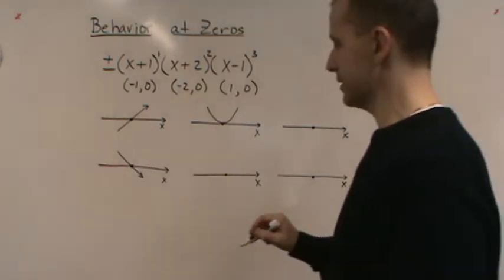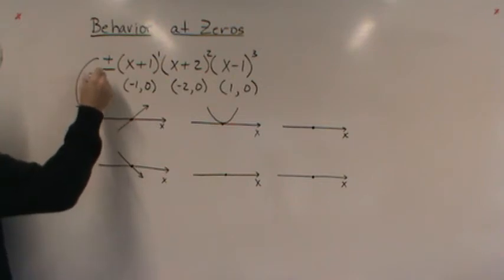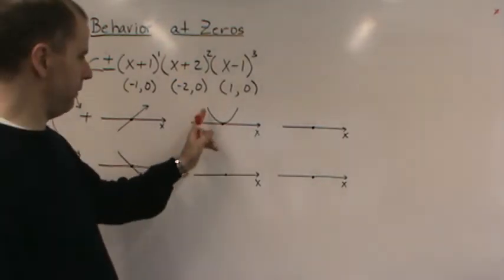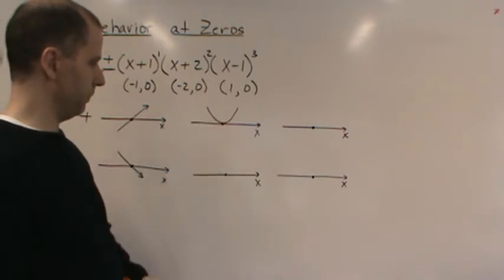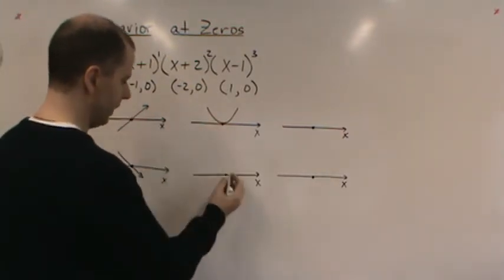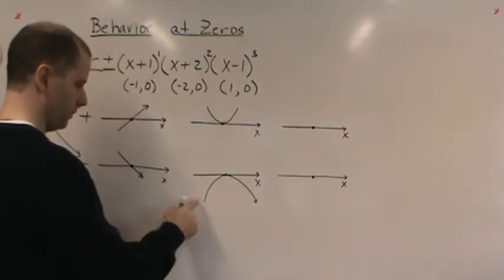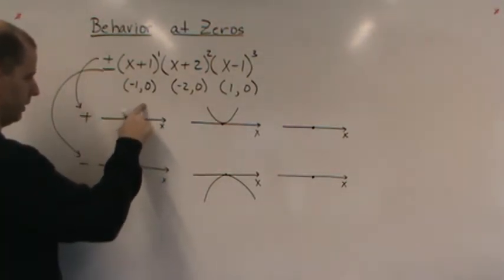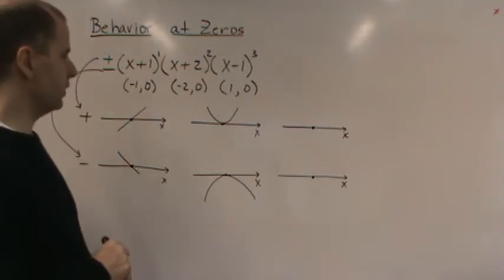With positive leading behavior, the graph is above the x-axis, touches down to the point, is tangential to it, and then changes direction back up. If the leading behavior is negative, it does the same thing but from below — it comes up, touches the x-axis tangentially, and turns back down. This describes just the general neighborhood of that point.